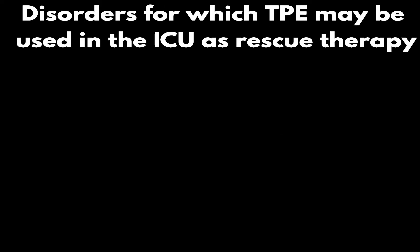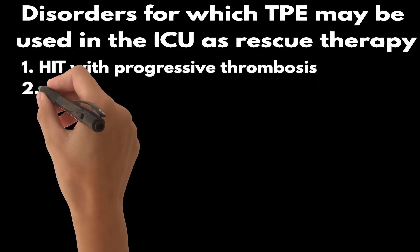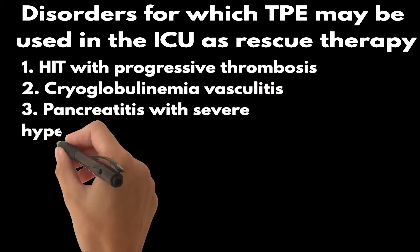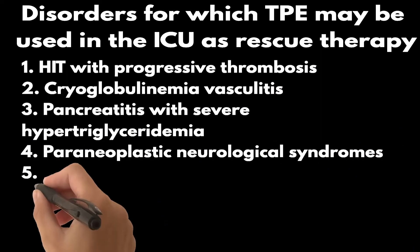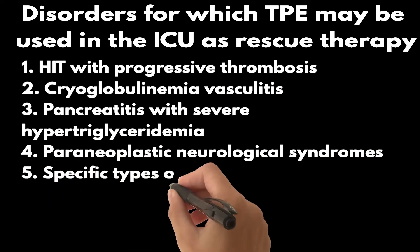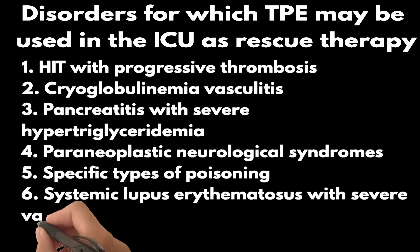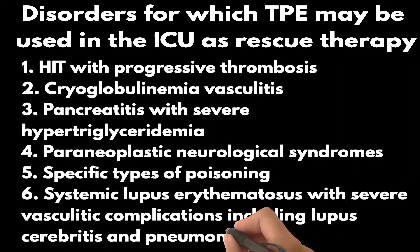Disorders for which TPE may be used in the ICU as rescue therapy despite lack of strong evidence about efficacy are: HIT with progressive thrombosis, cryoglobulinemia vasculitis, pancreatitis with severe hypertriglyceridemia, paraneoplastic neurological syndromes, specific types of poisoning, and systemic lupus erythematosus with severe vasculitic complications including lupus cerebritis and pneumonitis.